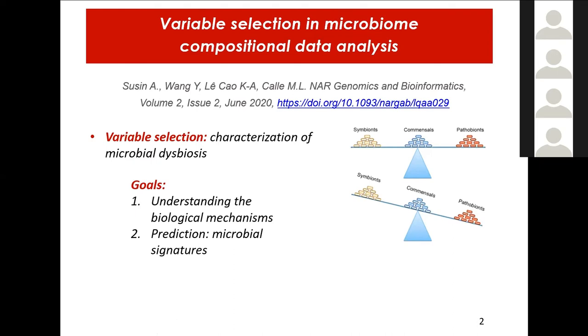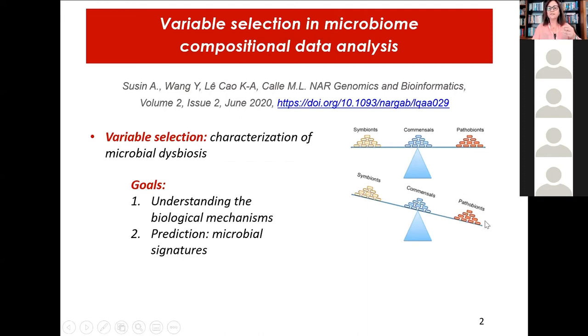When we talk of variable selection, there are slightly different goals. We maybe focus on understanding the biological mechanisms. And in this case, we want to identify all the species that are altered in this way or in this other way. But there is another goal that is focused on prediction, where the main goal is to define microbial signature, but perhaps it doesn't contain all the components that are altered, but it works for prediction or for progression. So this is important because some models will be more useful for one thing or for the other.